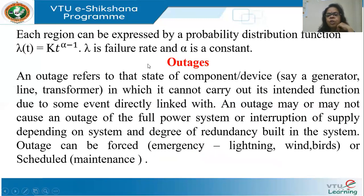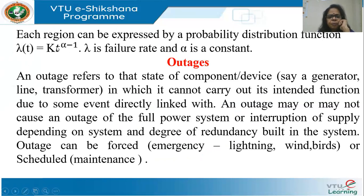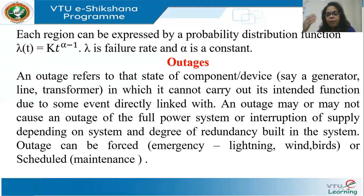Each region of the bathtub curve can be expressed as a probability or distribution function, because reliability is all about probability — you can never say exactly when a product will fail. The failure rate is commonly given by the expression: λ(t) = K · t^(α−1), where K is a constant, α is also a constant, and λ is the failure rate. Different equipment will have different failure rates, and the failure rate can be updated based on the age of the equipment.